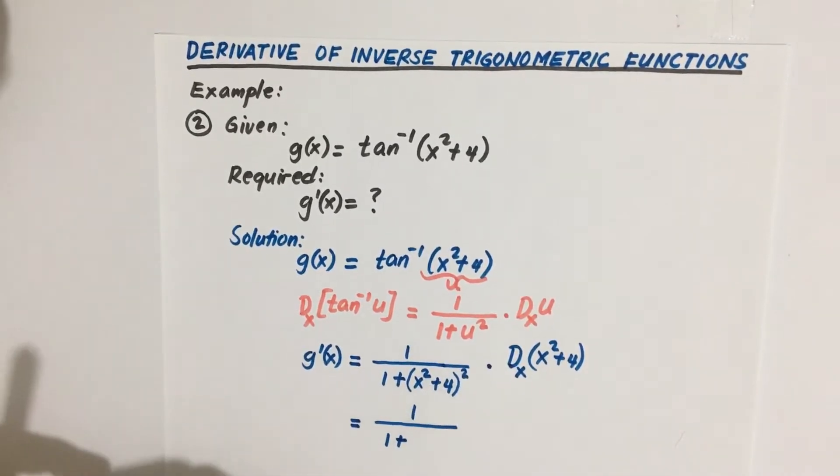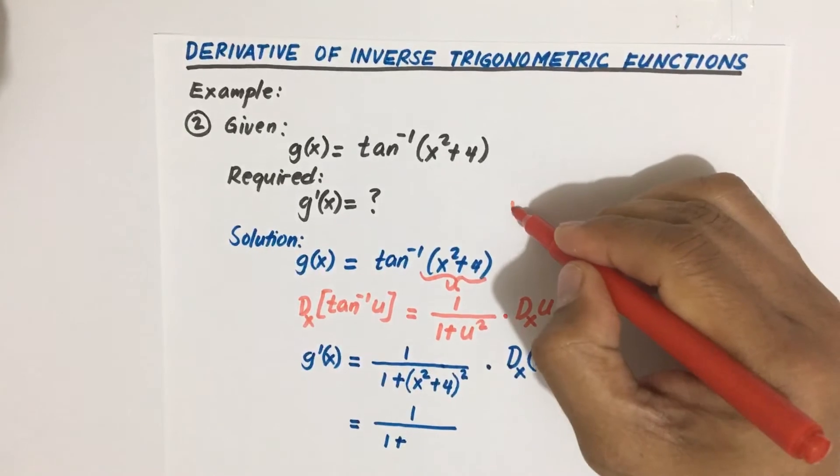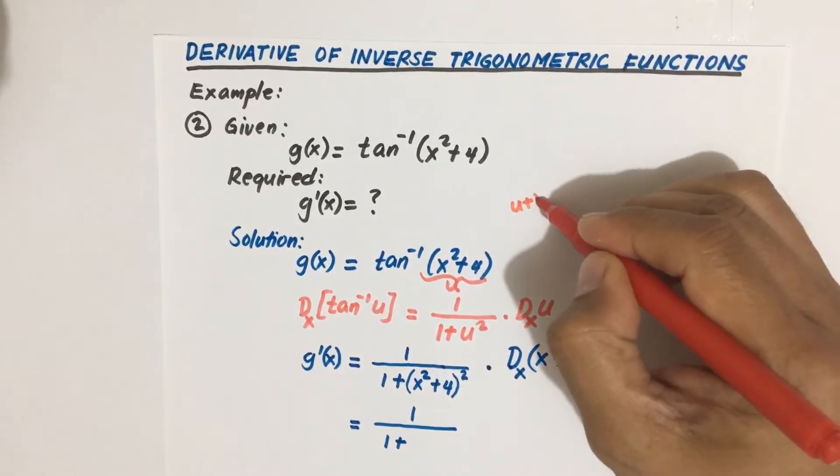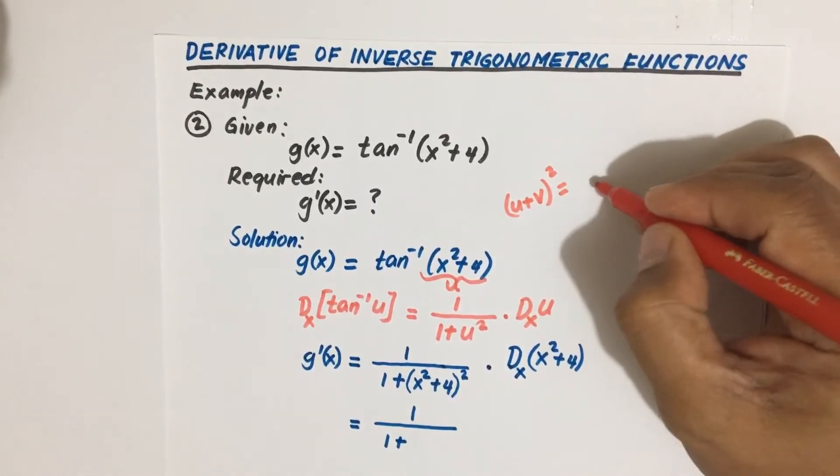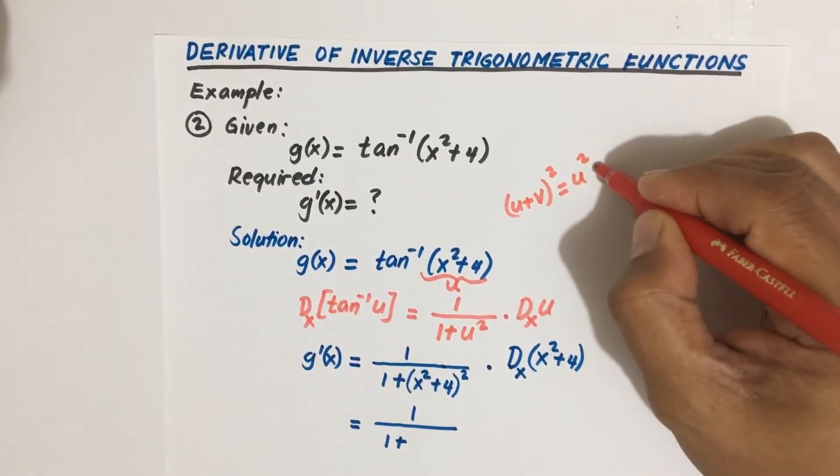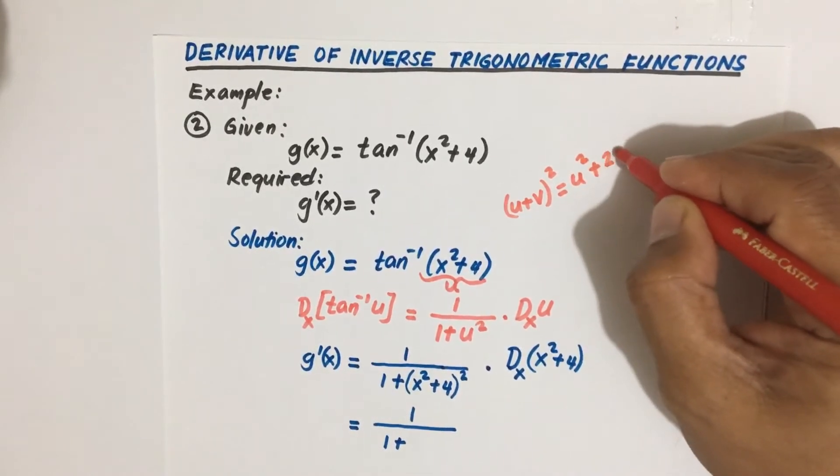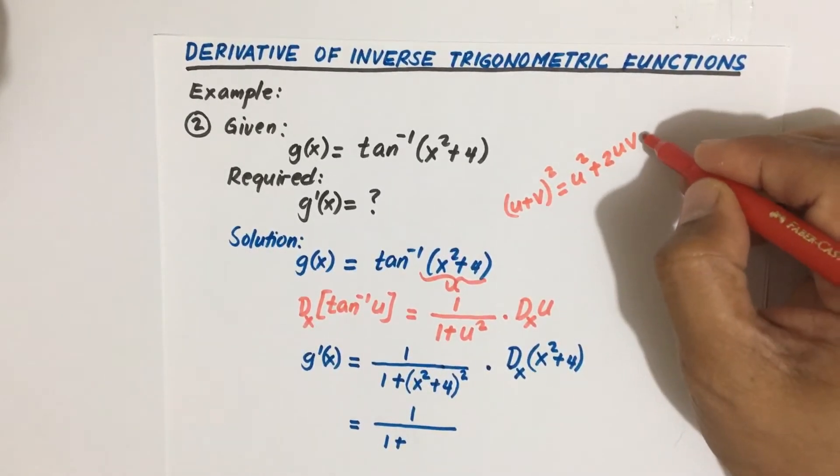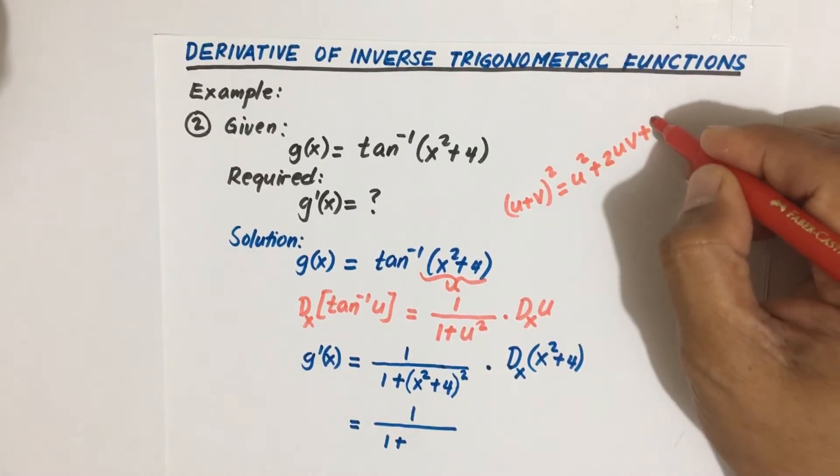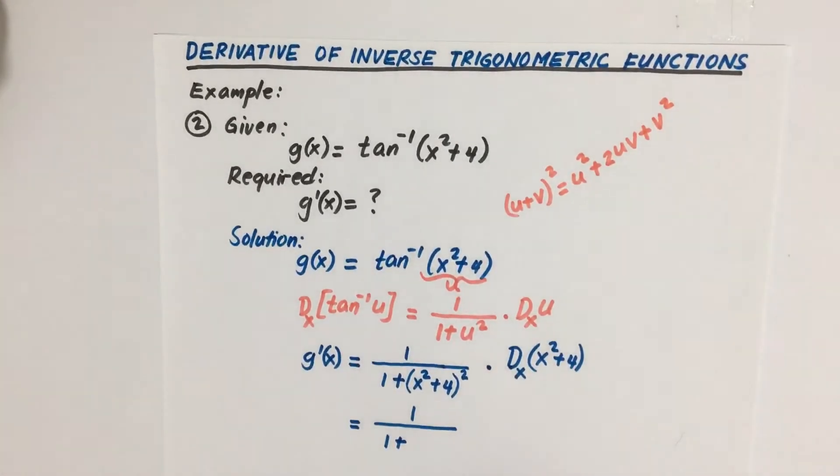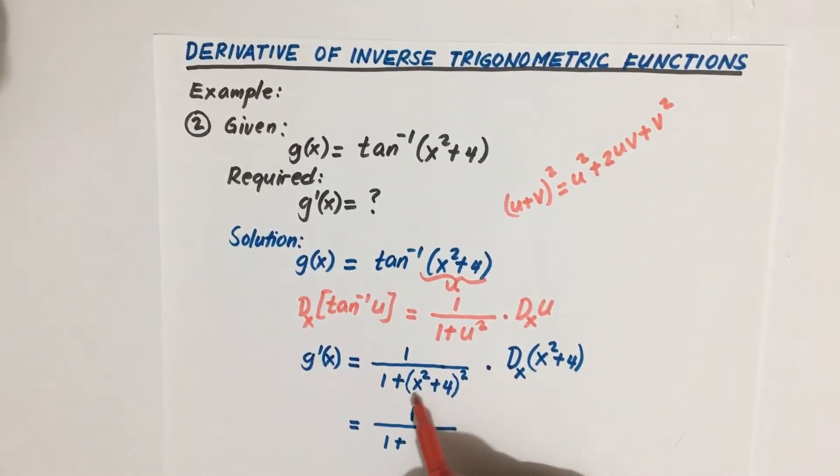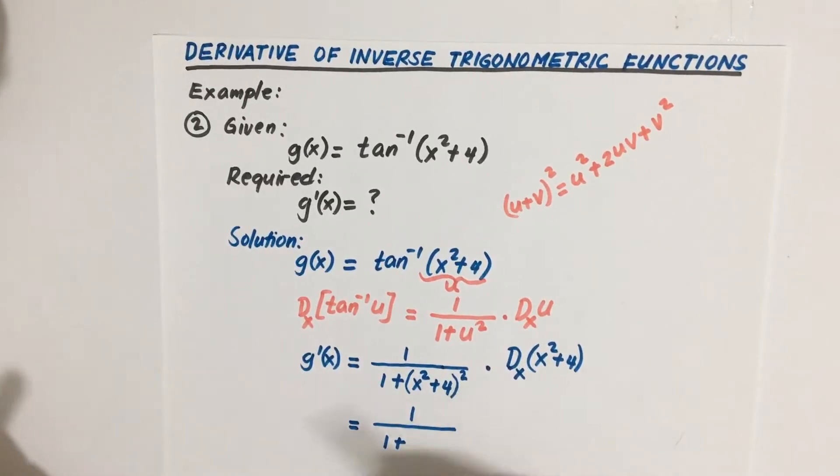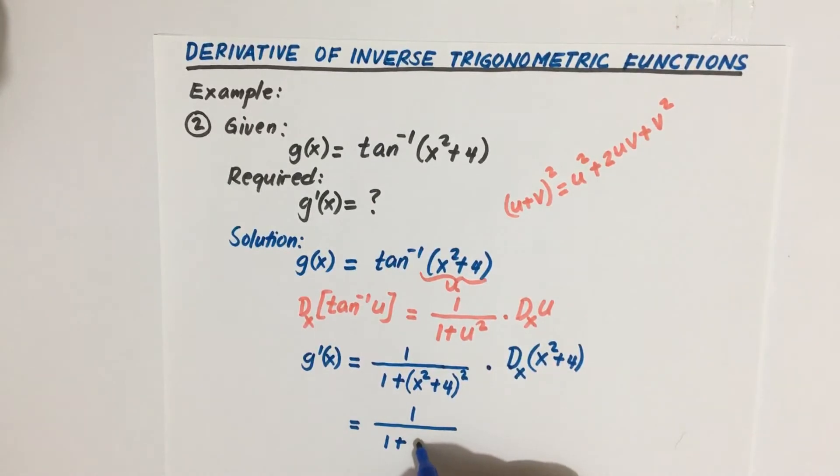So 1 divided by 1 plus, you can expand this one using the u plus v squared from our algebra. This is equivalent to square of the first term plus twice the product of the first and the second term, then plus square of the second term. So we can expand this one, or if you opt to retain it this way, that's still okay.